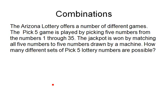One of the places I see combinations show up quite a bit is in lottery games. The Arizona Lottery offers a number of different games. The Pick 5 game is played by picking 5 numbers from the numbers 1 through 35. The jackpot is won by matching all 5 numbers to 5 numbers drawn by a machine. The order in which you pick these numbers makes absolutely no difference, so this is definitely a combination problem.